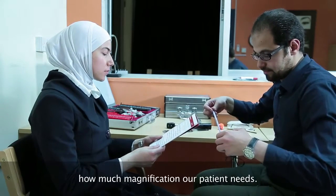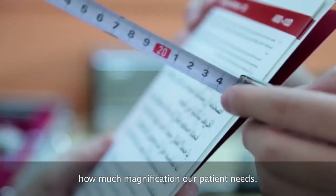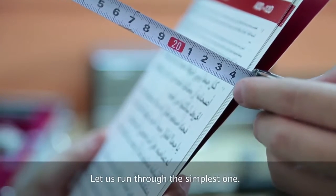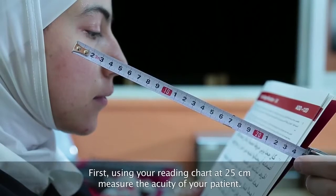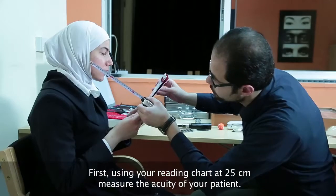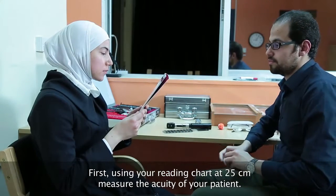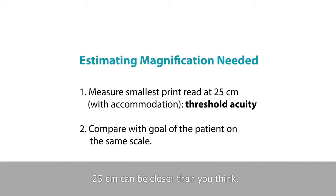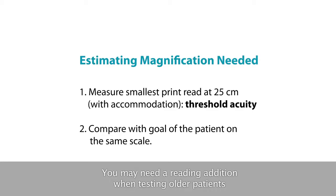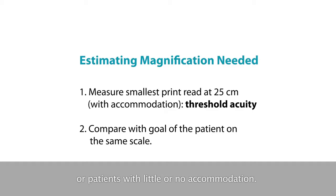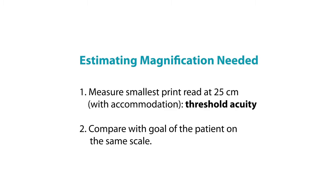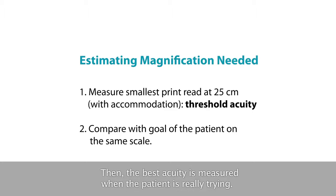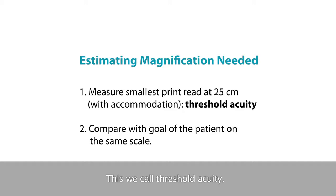There are many ways to calculate a rough idea of how much magnification a patient needs. The simplest method: using your reading chart at 25cm — which can be closer than you think, so use a ruler — measure the acuity of your patient. You may need a reading addition when testing older patients or those with little or no accommodation. Then record the best acuity when the patient is really trying. This is called threshold acuity.